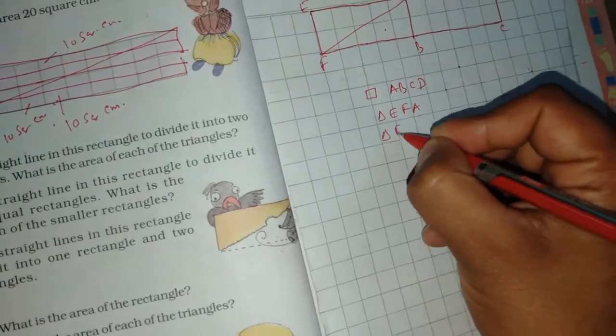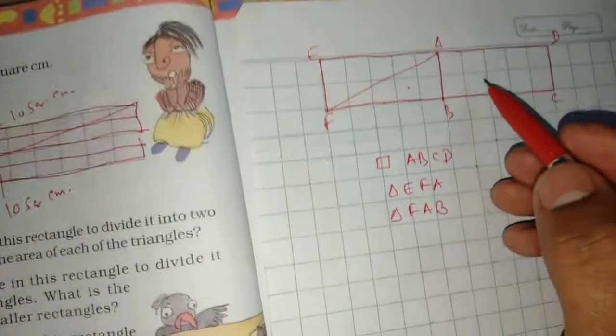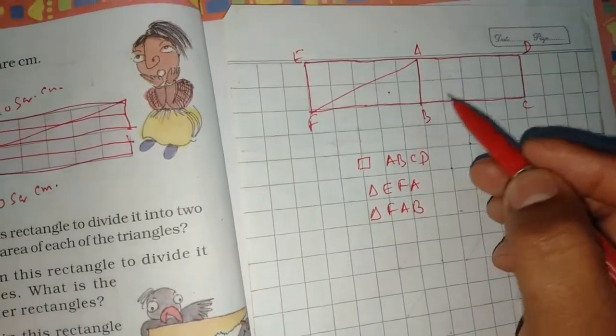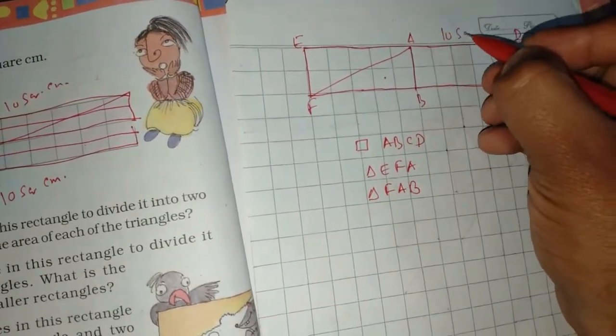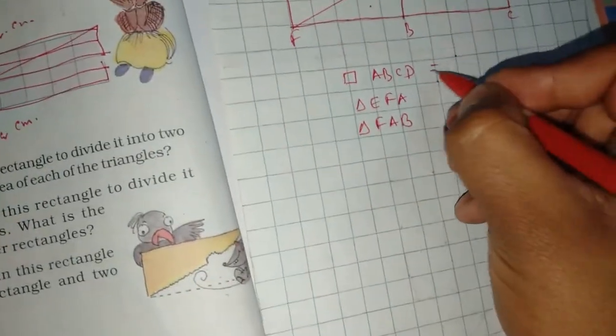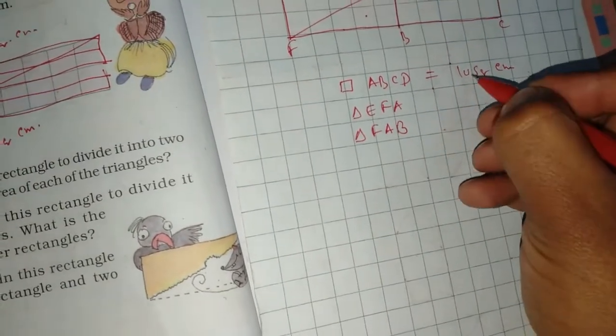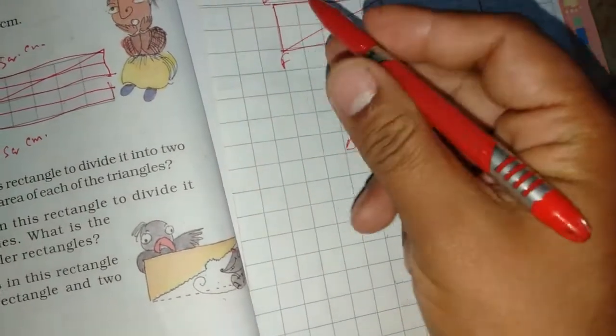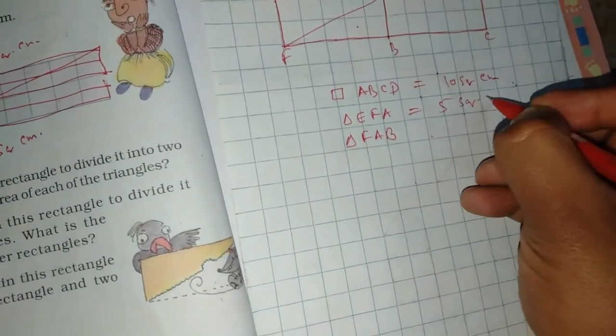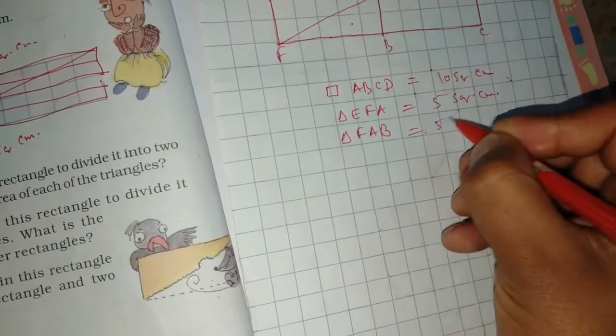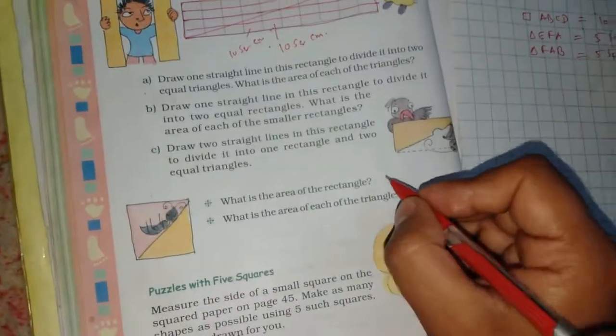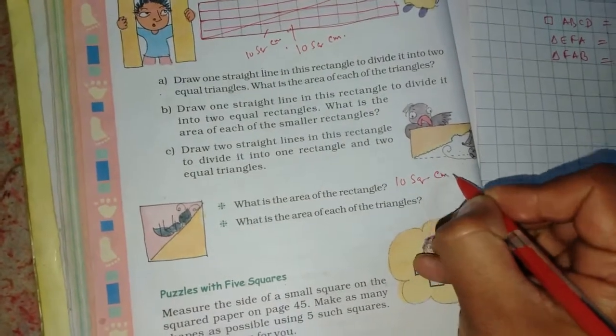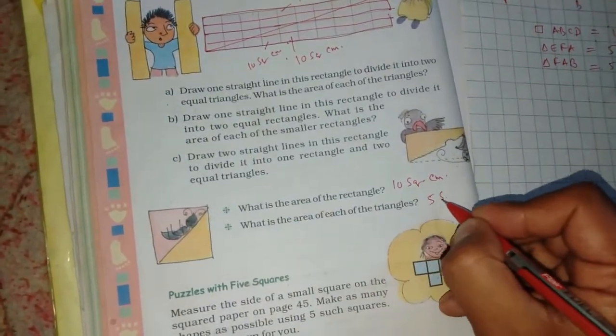What is the area of rectangle? Here is the rectangle: 1, 2, 3, 4, 5, 6, 7, 8, 9, 10. Half exactly 10 square centimeter, so 5. What is the area of rectangle? 10 square centimeters. Area of each of the triangles: 5 square centimeters. Clear.